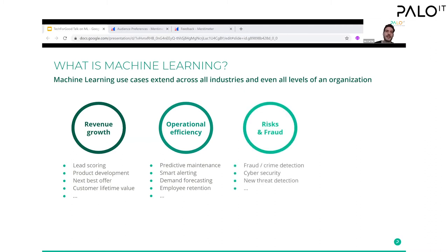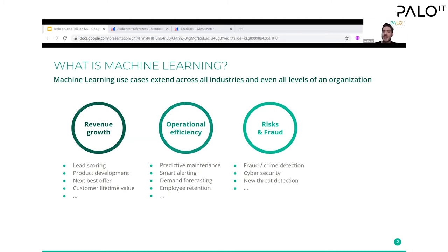Machine learning can also be used for risk management. If we have data points for all transactions over the last six months and know which were fraudulent, we can predict fraudulent transactions in the future based on features like the device used, the amount, decimal values, the recipient, and where the transaction was initiated. Machine learning can also parse through millions of logs to detect anomalies and security flaws, providing ready data to patch our security frameworks — parsing through amounts of data that humans otherwise could not handle.